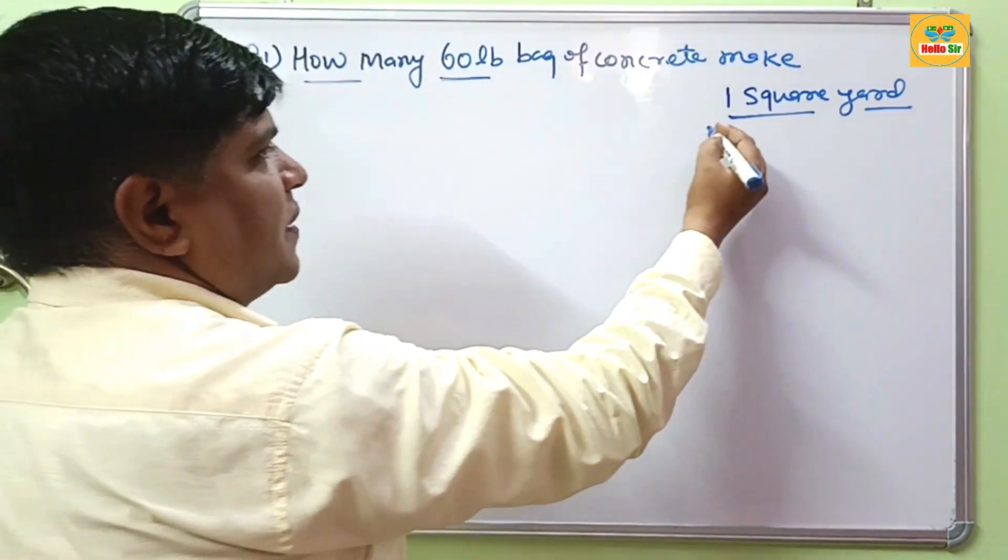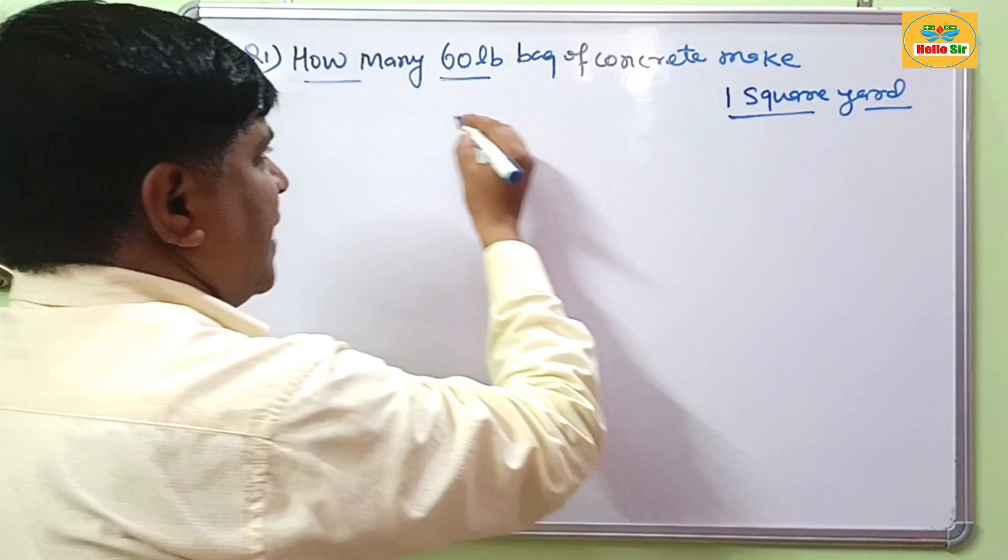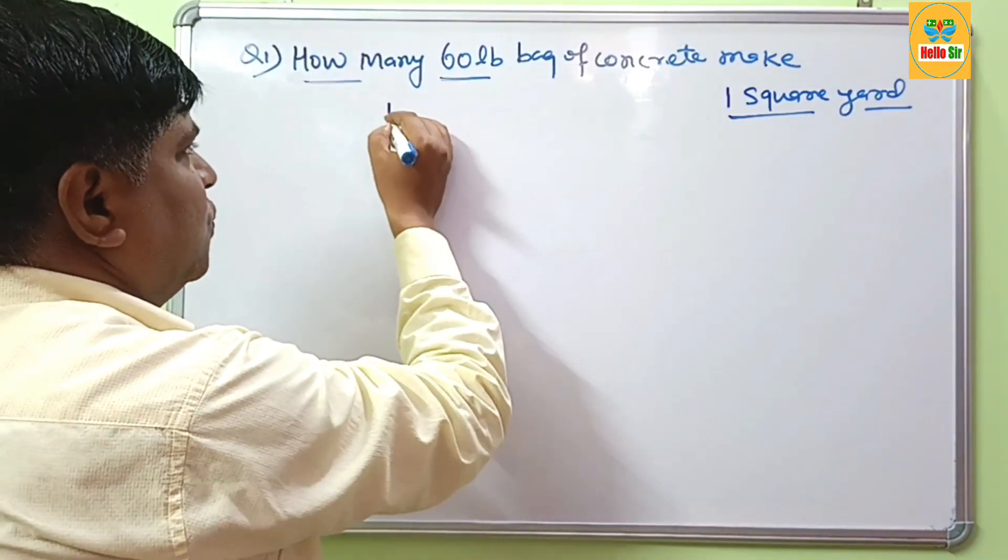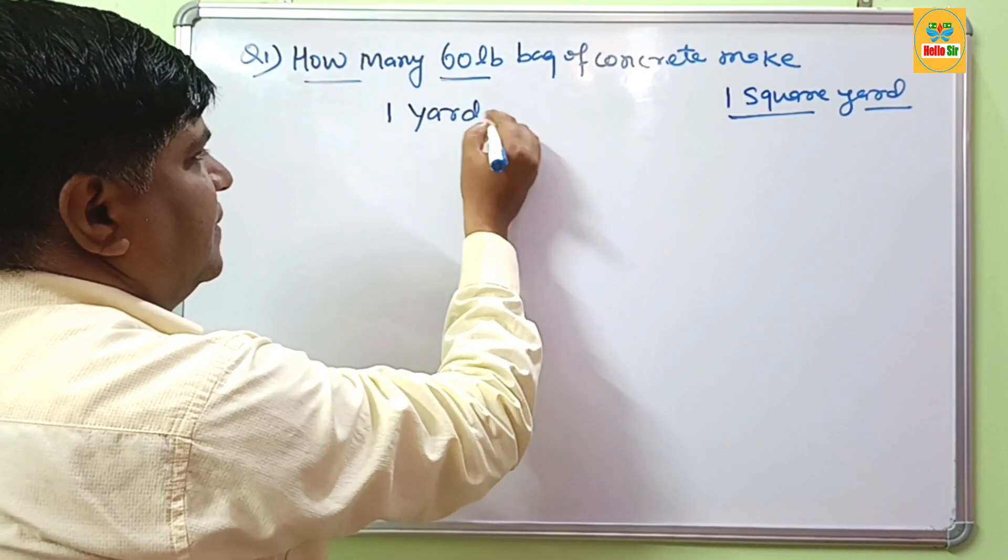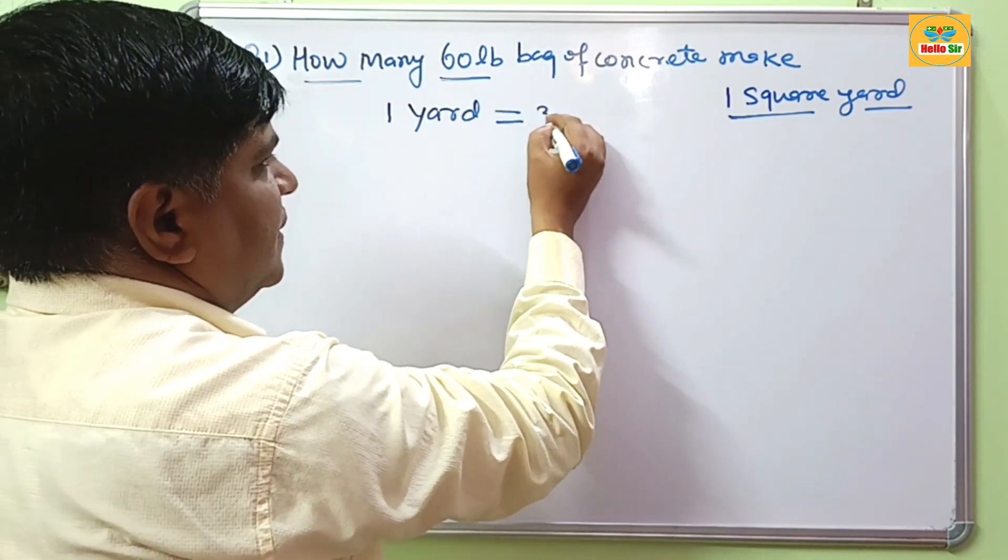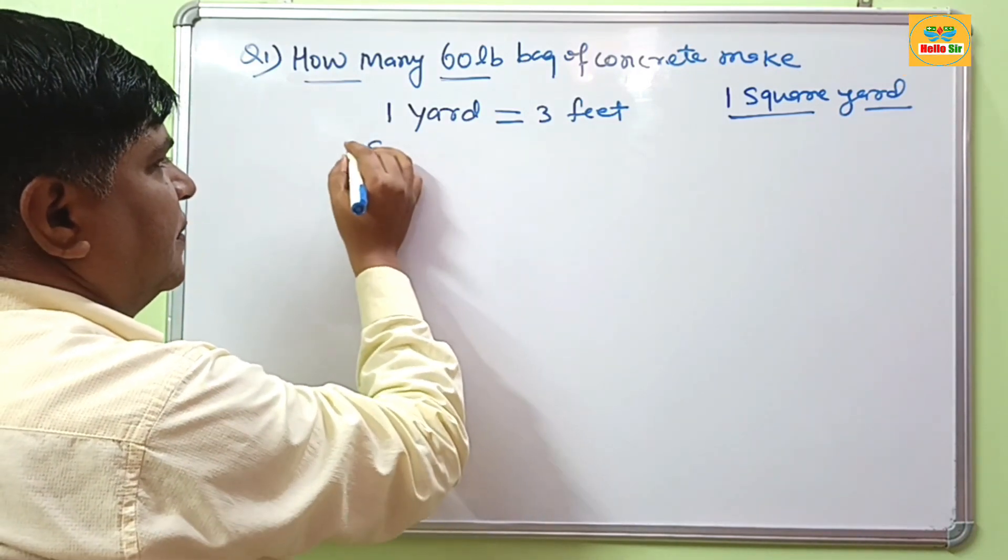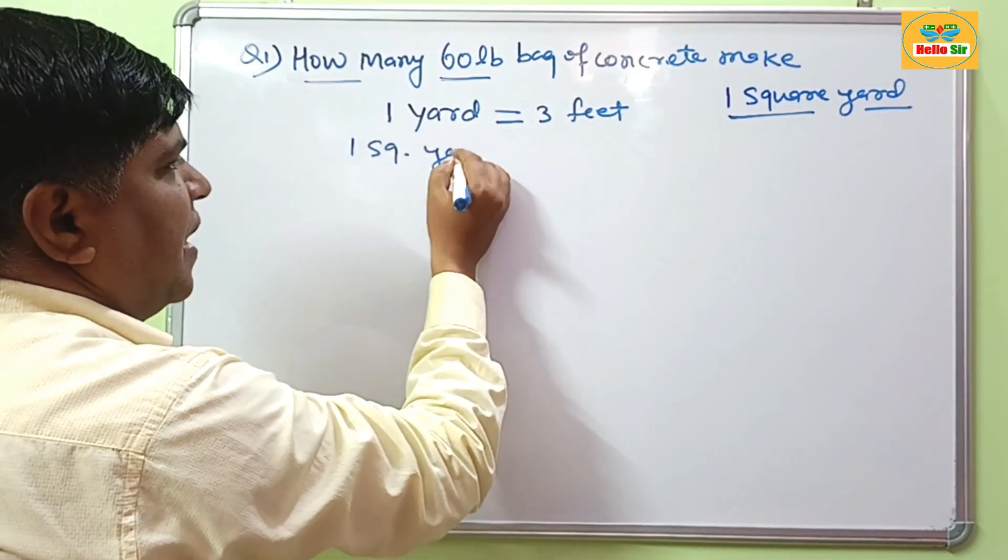Remember this question: you have given 1 square yard. First we know about square yards. You know that 1 yard equals 3 feet, and you have given square yard, 1 square yard.